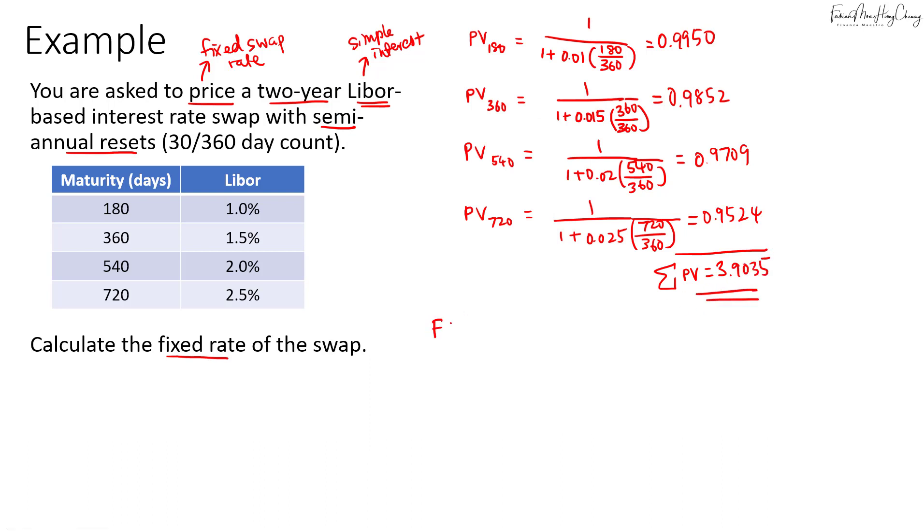So to get the fixed swap rate, it's very easy to remember. Just take the, assume the notional is 1. So just take 1, then we minus the last PV, which is 0.9524. And then we divide by the total PV, which is 3.9035. So this will give us our fixed swap rate.